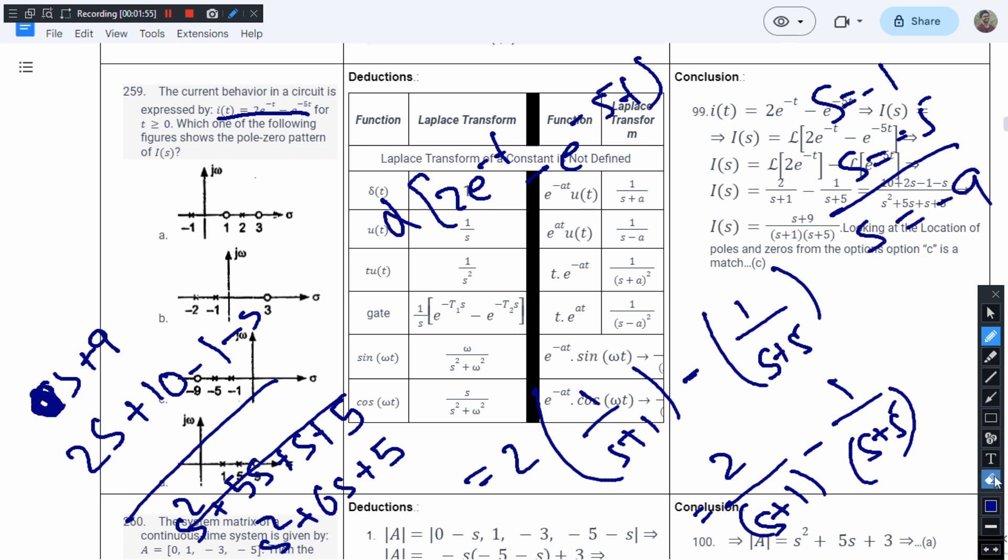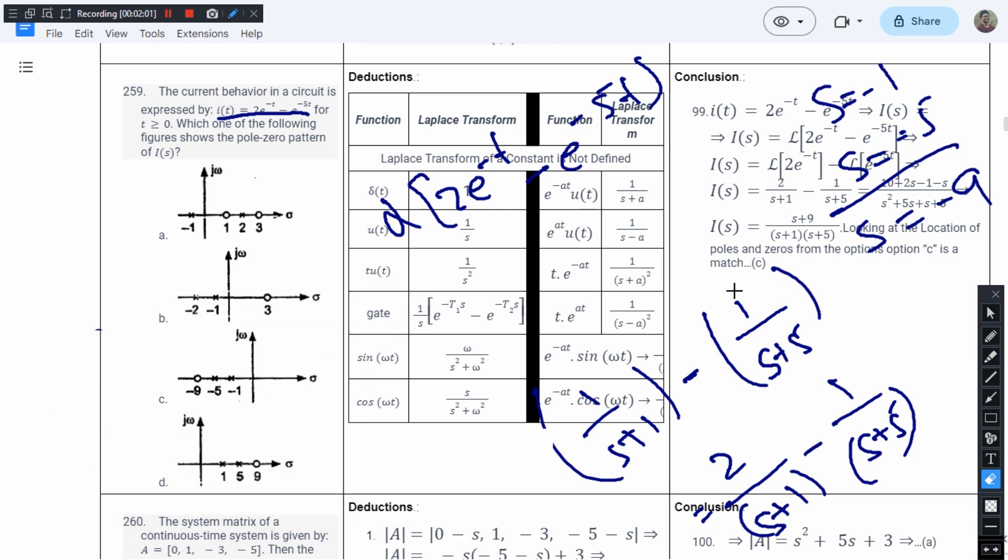I need to plot them on the graph. Since all of them are negative values we can eliminate this, this, and this. After eliminating them we are only left with option C that has the zero at -9 and the poles at -5 and -1. For question number 259 the answer is option C.